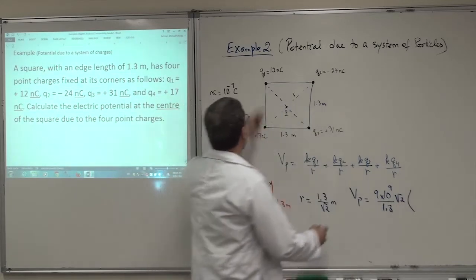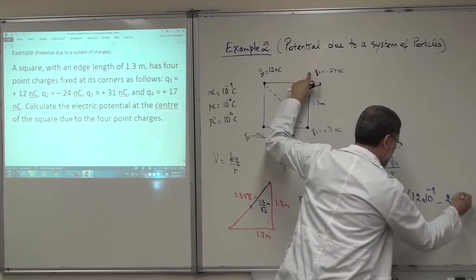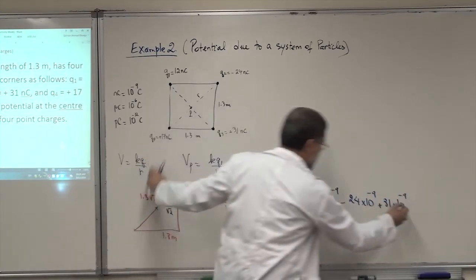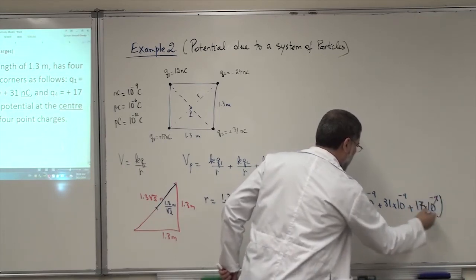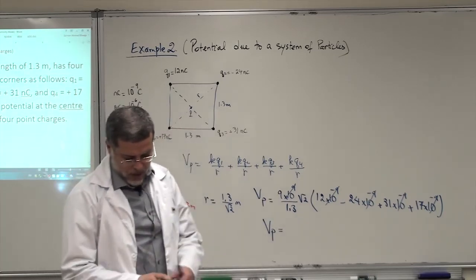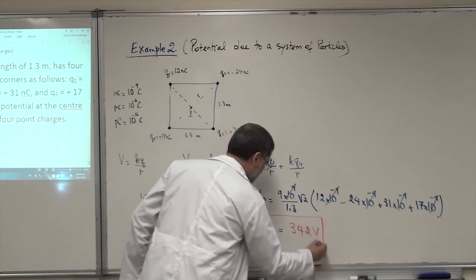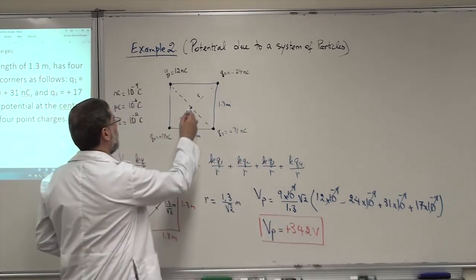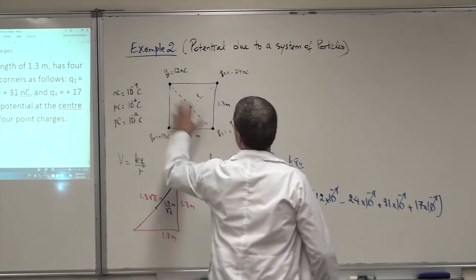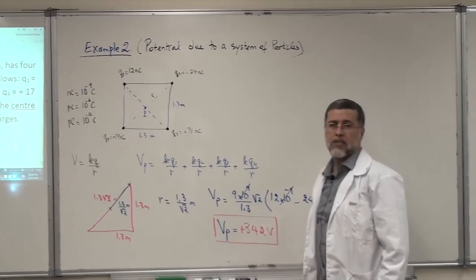Now I know R, K, and Q, so I can find the potential at point P. Using K equals 9 times 10 to the 9, with K over R as a common factor — that's square root of 2 over 1.3 — and opening the bracket for the charges: Q1 is 12 nanocoulombs, Q2 is minus 24 nanocoulombs, Q3 is plus 31 nanocoulombs, Q4 is plus 17 nanocoulombs. The 10 to the minus 9 cancels with the 10 to the 9, and the final result is the potential equals 342 volts at point P.